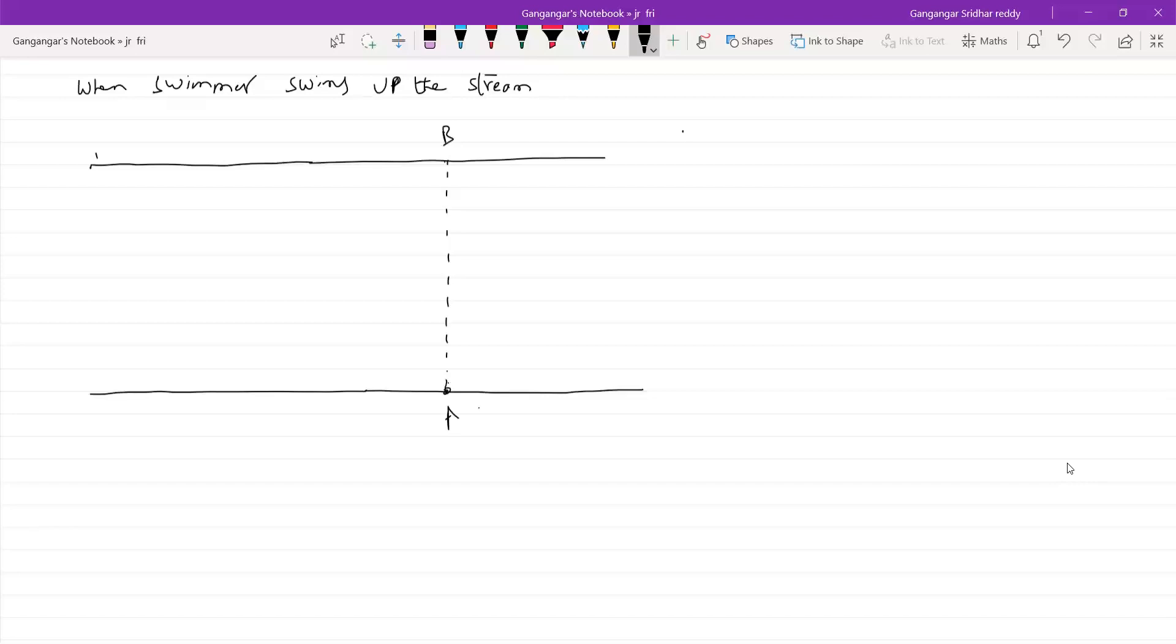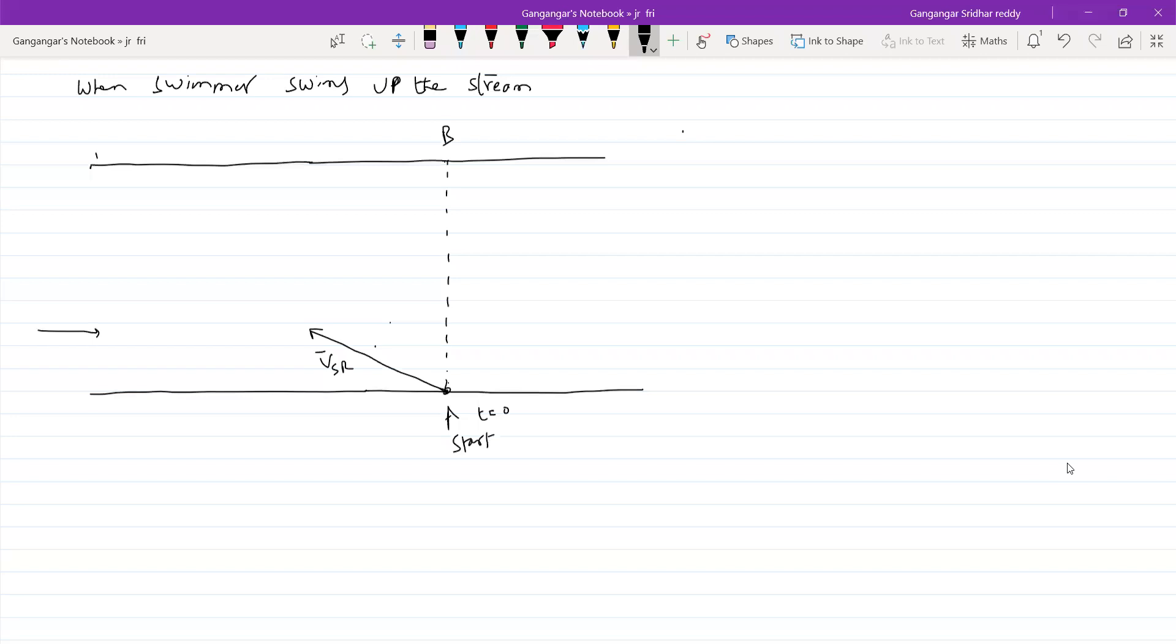So you will start at T equals zero. So the bank on which you start, let it be that one, so there's T equals zero. So now you will swim upstream. If VSR, a component of VSR against VR, then it is upstream. This is the velocity of river current.